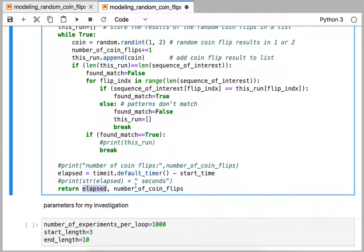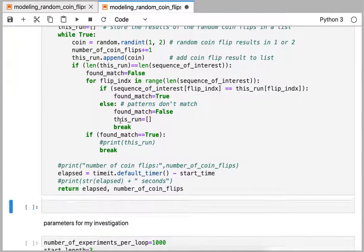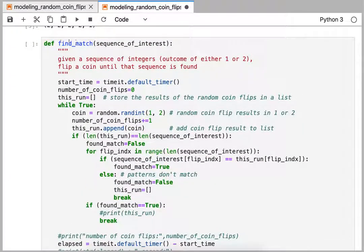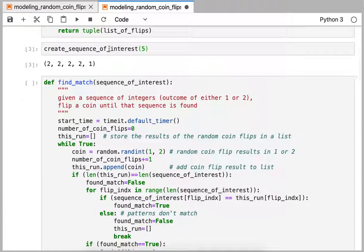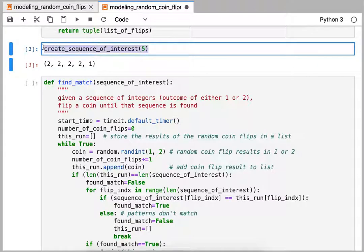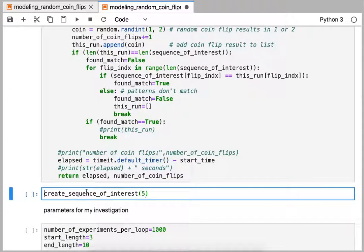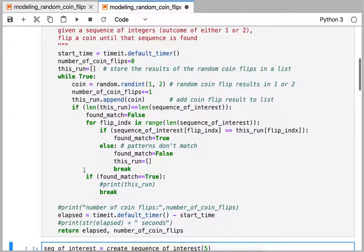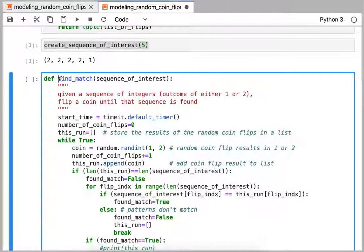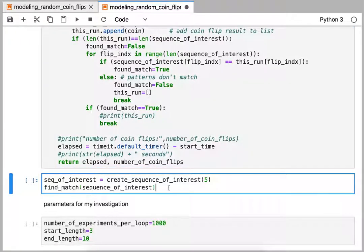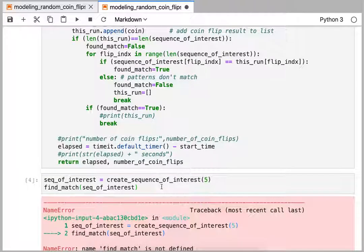Let's insert a new cell here and we'll call this function just to see how it works. So I happen to already have a sequence of interest, and then I'm going to call the function here, find match. I need to pass in my sequence of interest first.